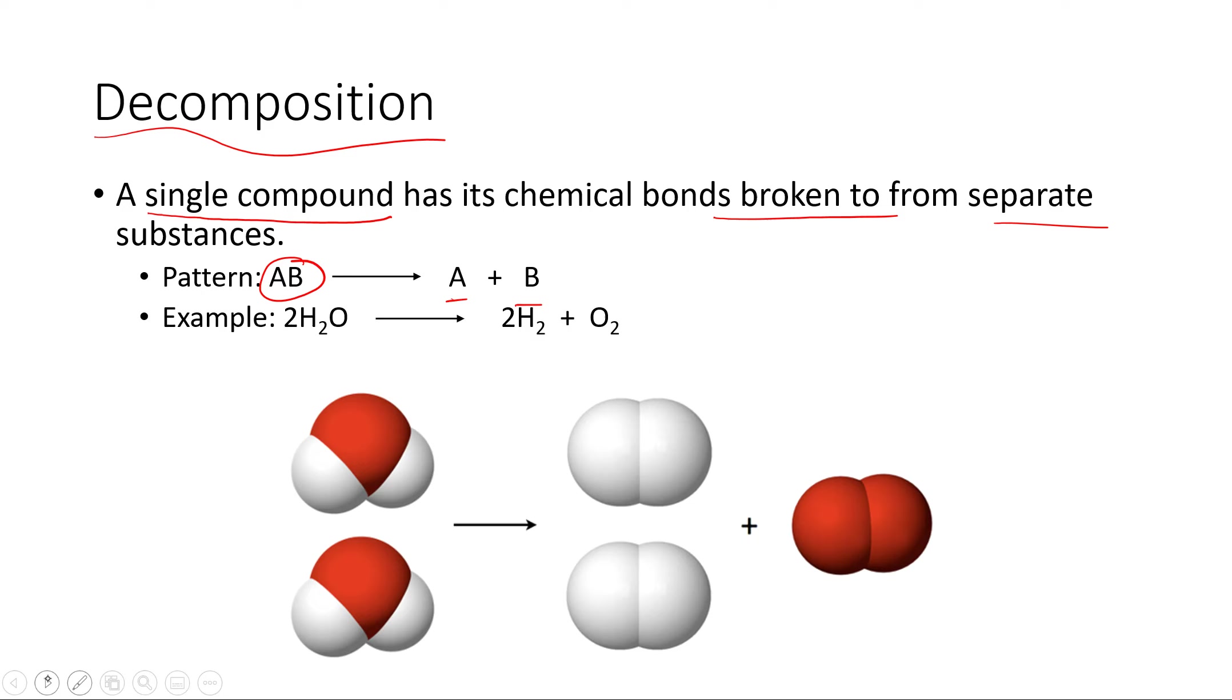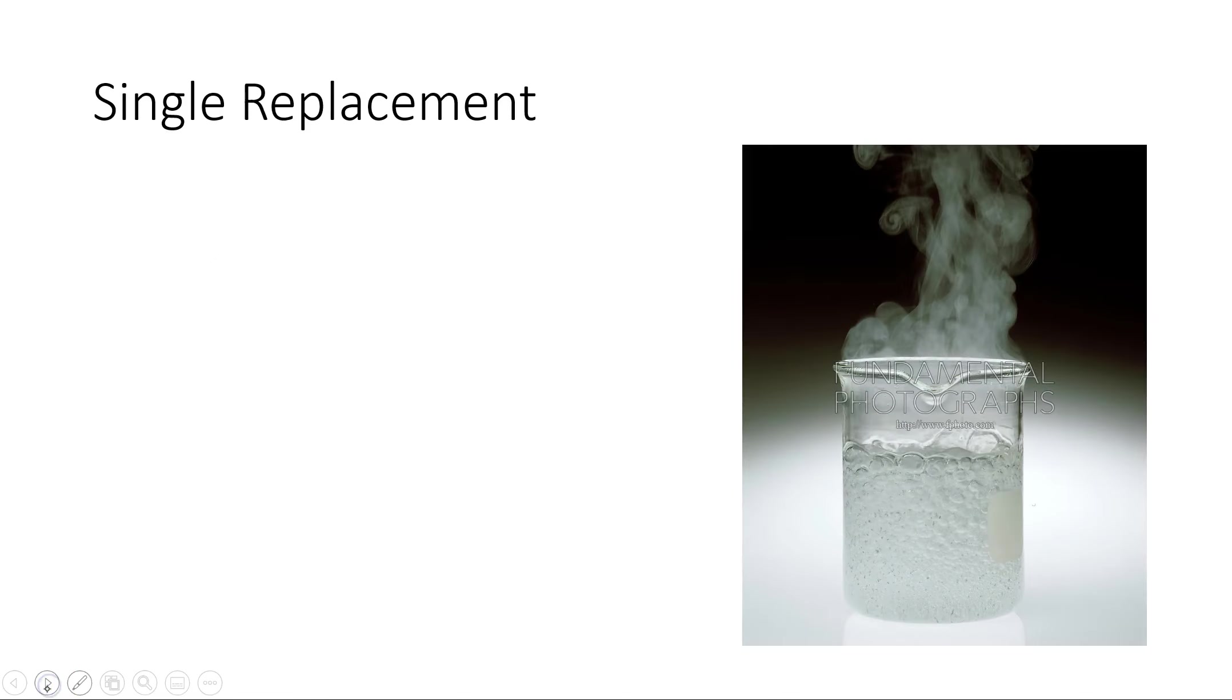So an example here would be if we started with water, in this case, we could supply some electricity, running electric current through that water. So we have our oxygens and our hydrogens chemically bonded, and as a result, we could separate that water into hydrogen gas and oxygen gas.